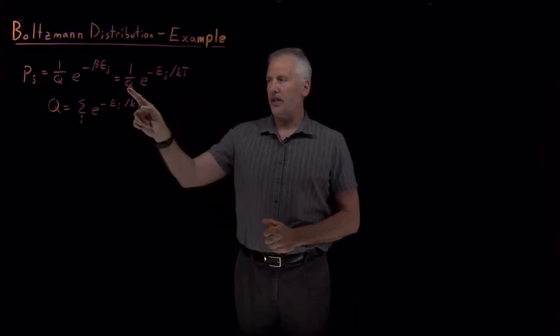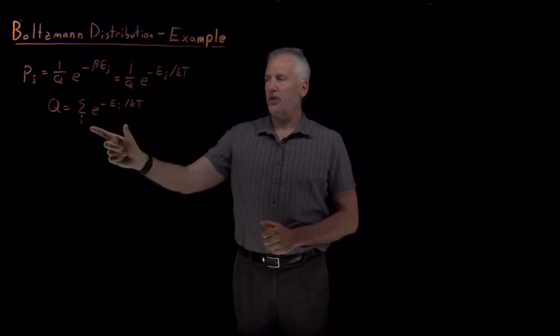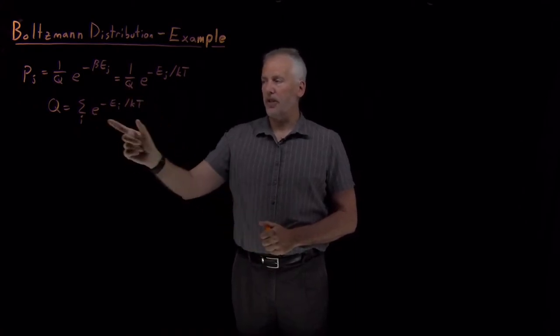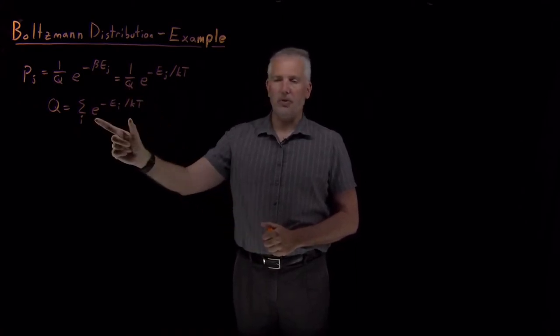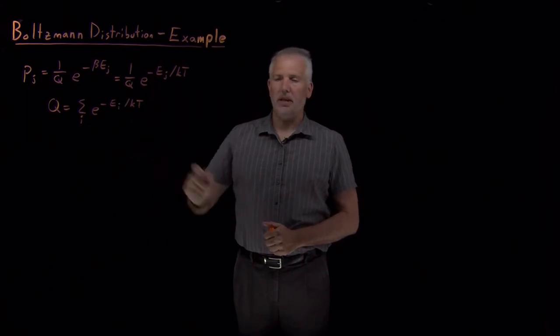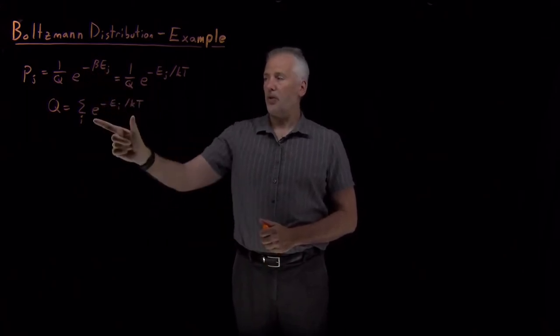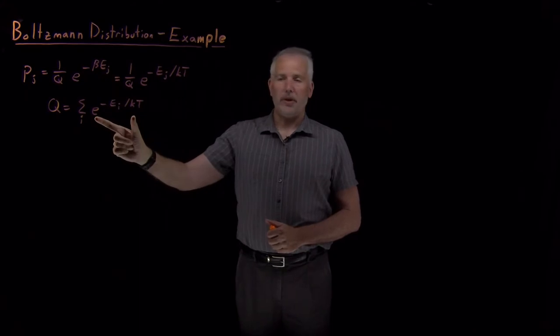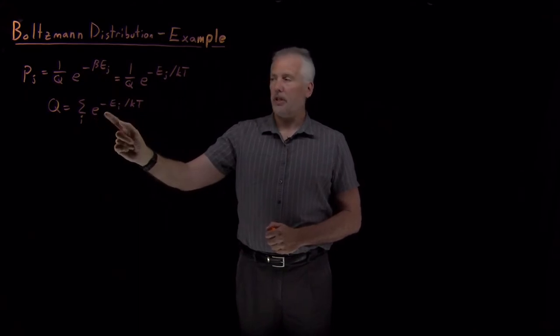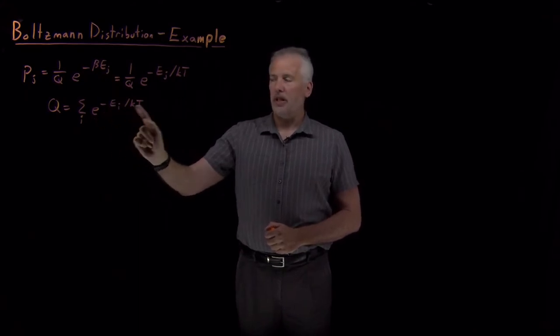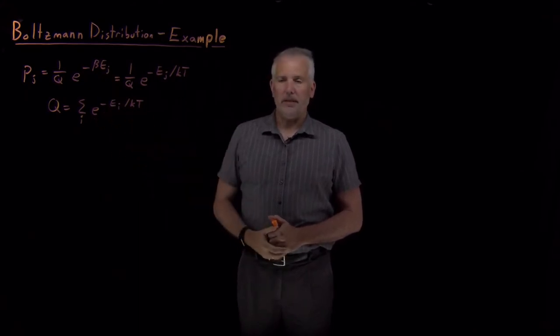This quantity Q is just the sum of all the Boltzmann factors — the sum of all these e to the minus energies. Either e to the minus beta times energy, or if we'd rather use temperature, which we usually would, it's e to the minus energy divided by kT.